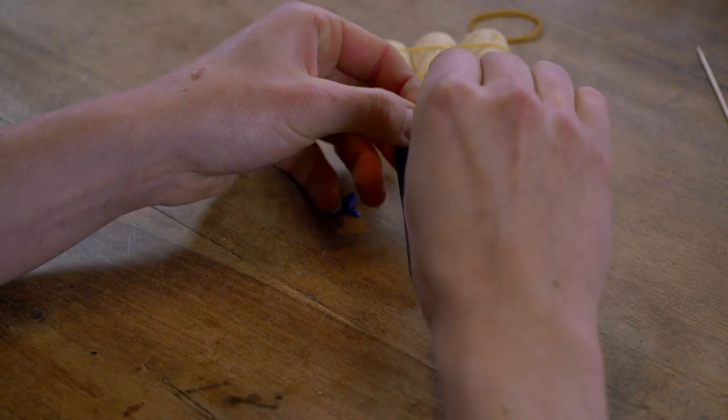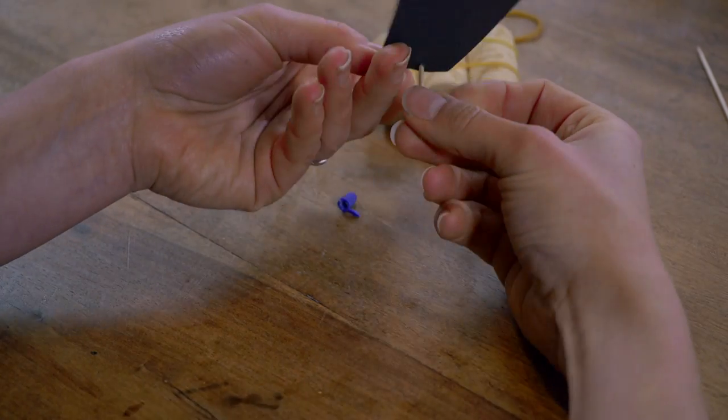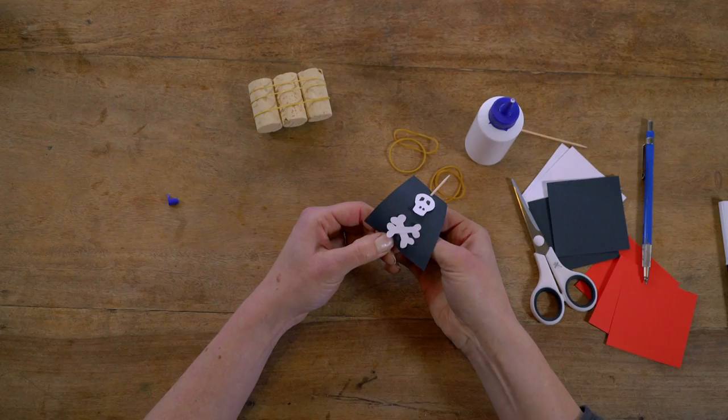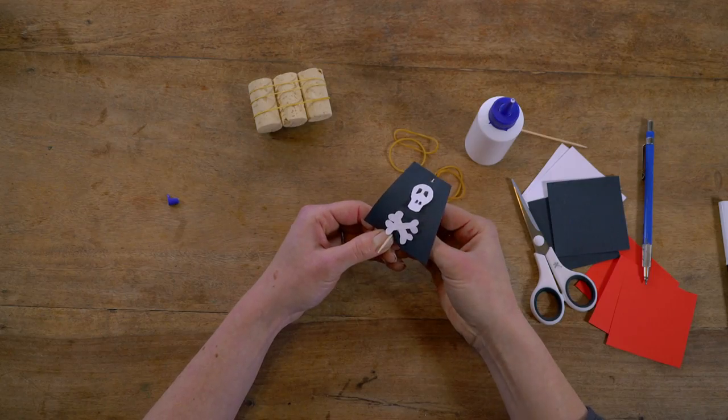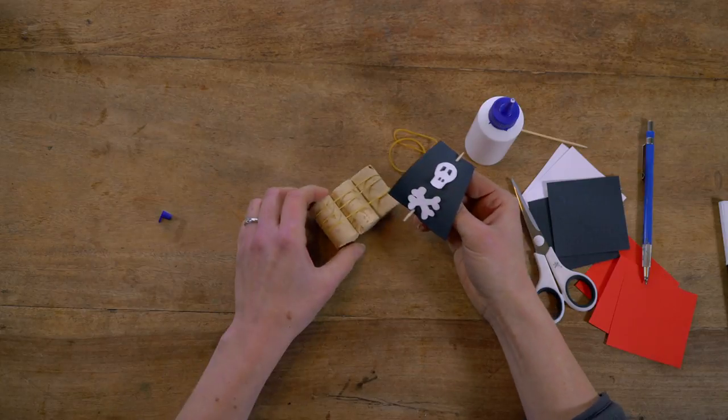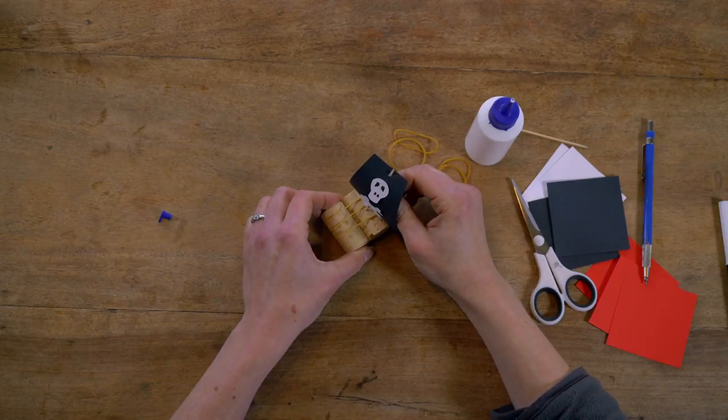Cocktail sticks are sharp so ask your grown-up to help you here. Pierce both ends so the sail sits neatly on the stick. Then have your grown-up push the cocktail stick into the middle cork.